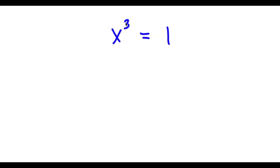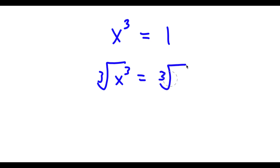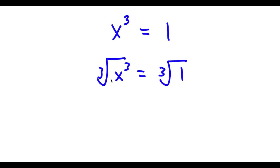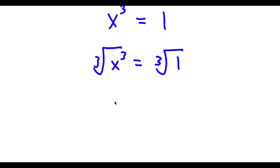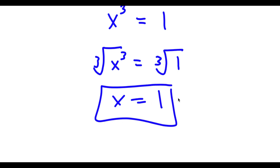So in this problem, I have x to the power of 3 equals 1. I'm going to first start by taking the cube root on both sides. So I have the cube root of x to the power of 3, which is x, and the cube root of 1, which is simply equal to 1. So we already have one solution of x.